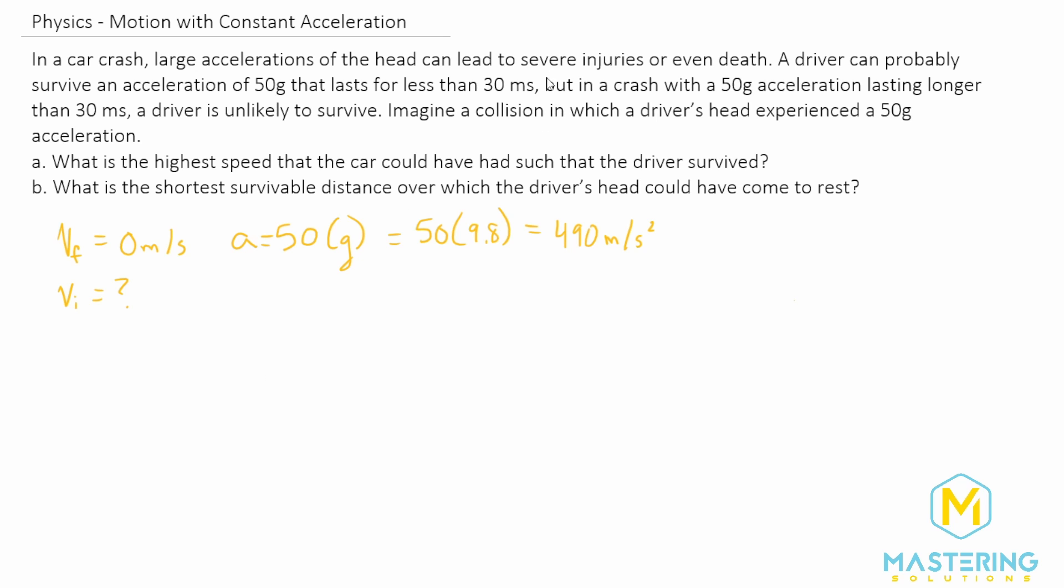So now we have acceleration, the velocities. Now we need to figure out the time and they tell us it is less than 30 milliseconds. So T for it to be survivable has to be less than that. So 30 milliseconds is also the same as saying 30 times 10 to the negative three seconds. So now we have standard units.